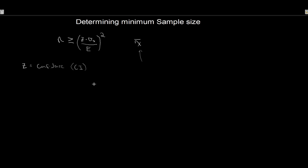We calculate Z using the same values as for confidence intervals. Sigma — σ_x — is the true population standard deviation, which must be known in our scenario. E is the maximum allowable sampling error, defined as x̄ minus μ: how far your estimate is allowed to deviate from the true population mean. That's essentially how accurate you want your results to be.